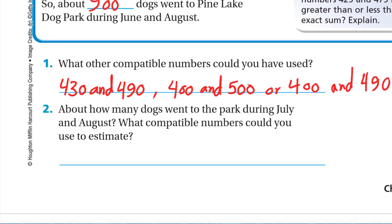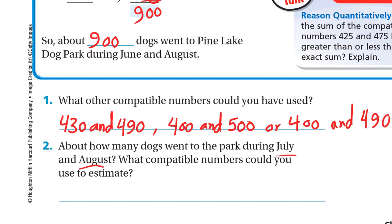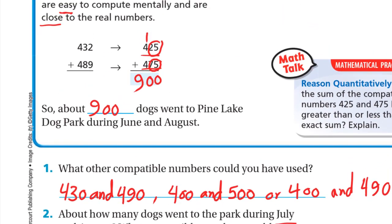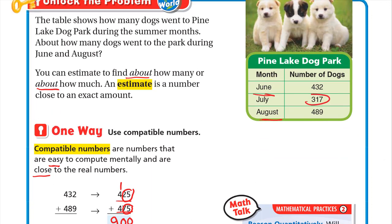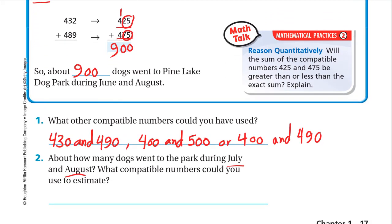Here he asks about how many dogs went to the park during July and August. What compatible numbers could you use to estimate? In July it was 317 and in August 489. So we have 317 and 489. He said about how many dogs, so we can use the estimate.